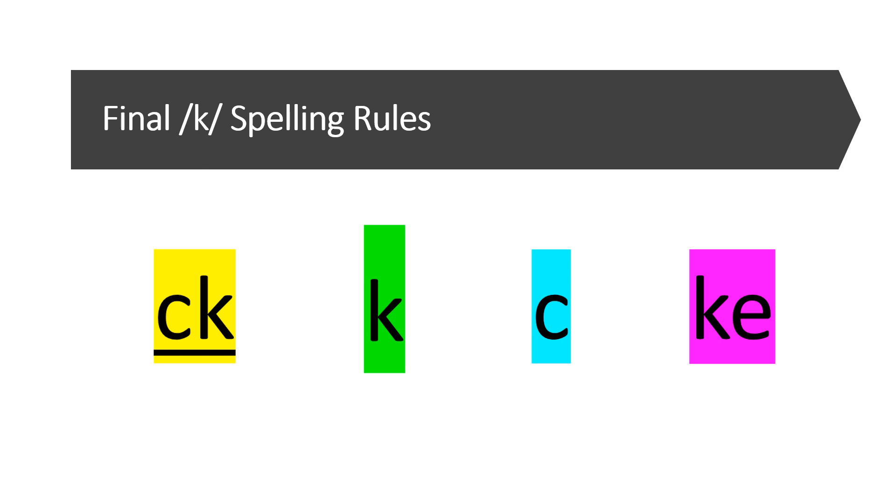Spell with letter 'k' after a consonant or vowel digraph, as in milk, book, and week. Spell with letters 'ke' after a long vowel (a, e, i, o, u), as in rake, bike, and coke.